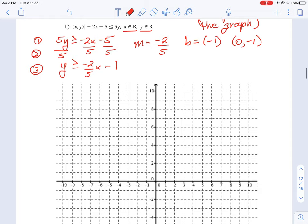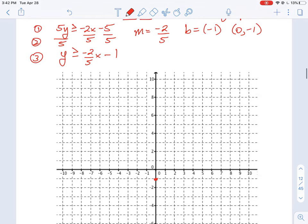Our point here is 0, negative 1 right here. That is our plotted point. We know our slope is going to be negative 2 down and then 5 over, which will give us two points down to negative 3 and then 5 over. So we have our two points.